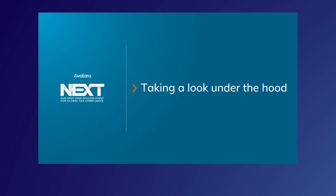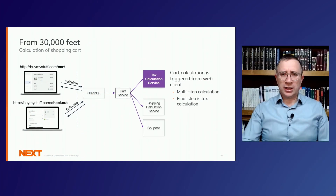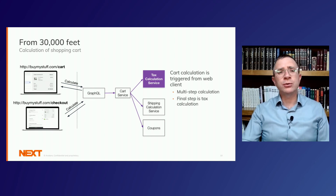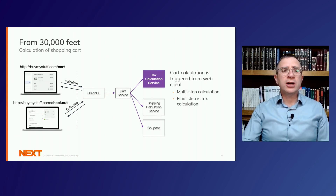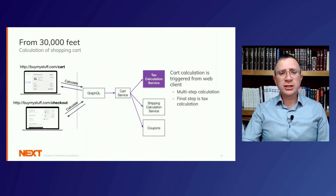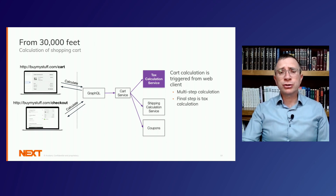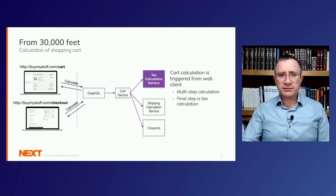Now let's take a look under the hood and see how we built this system from a very high level. Looking at the tax calculation: both the cart and the checkout are calling via our GraphQL protocol out to the cart service, where we are adding the cart items, calculating shipping, coupons, and finally the tax calculation.